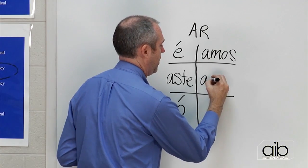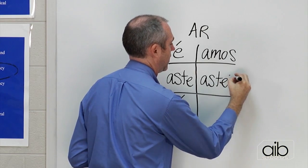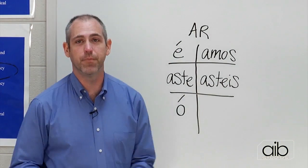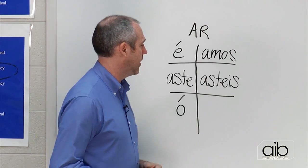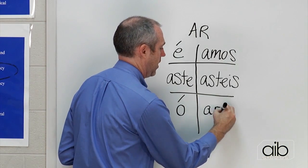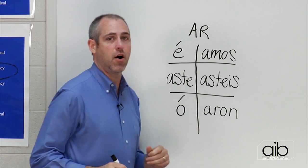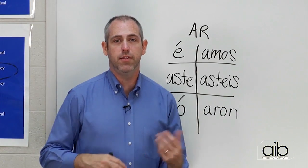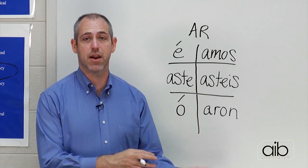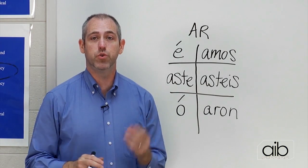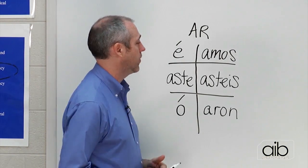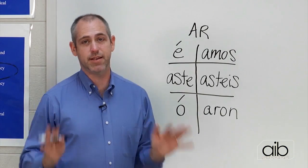The vosotros form, our not so popular form, is astéis. Vosotros astéis. Nadastéis. So, astéis is the ending. And then down here on the bottom right is aron. A-R-O-N. They swam. Ellos nadaron. Or ellas nadaron. You all, plural, swam. Ustedes nadaron. So those are our basic endings for AR verbs in the preterite tense.